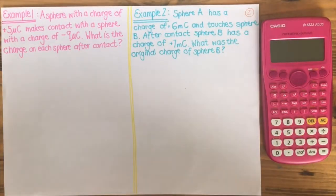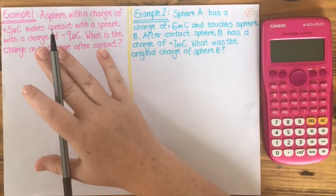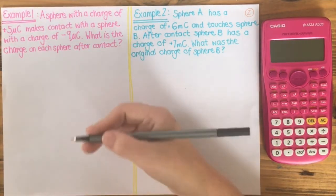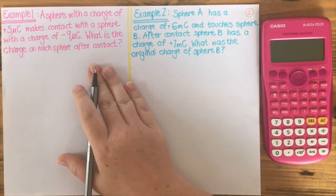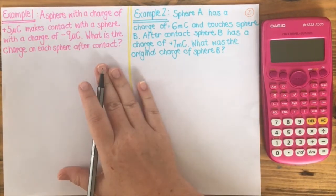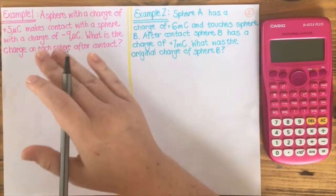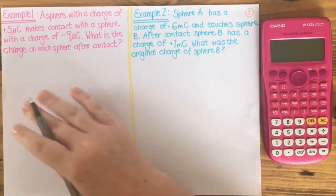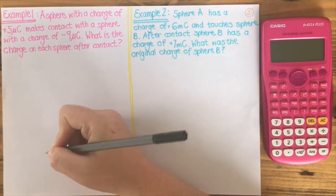Hi grade 10s, I'm going to be doing two examples with you based on the principle of conservation of charge. I have written out these examples and I'm going to work through them step by step so that you can see what is best practice for answering a question like this. The first thing we do is read — you should have a pen, highlighter, something in your hand that you can underline with and scratch down information as you are reading and finding important bits of information.